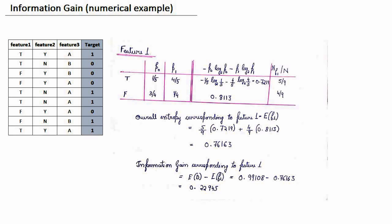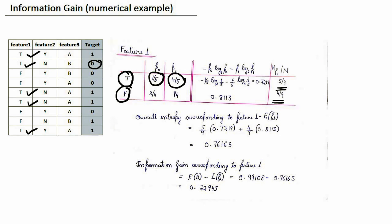Now we will try to calculate the entropy corresponding to each of the individual features: Feature 1, 2, and 3. We consider Feature 1 first. It has only two distinct values, true and false, out of which true has five occurrences and false has four occurrences. Out of all five occurrences when Feature 1 is true, the negative class happened only once, giving probability 1/5, while the remaining four occurrences are positive, giving probability 4/5. For Feature 1 being false, the negative class happens three times and the positive class happens only once. Using the entropy formula, we get the entropy as 0.76.